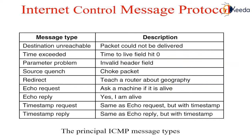First we will see the internet control message protocol, that is ICMP. The operation of the internet is monitored closely by the routers. When something unexpected occurs, the event is reported by ICMP. ICMP is also used to test the internet. About a dozen types of ICMP messages are defined, and each ICMP message type is encapsulated in an IP packet.